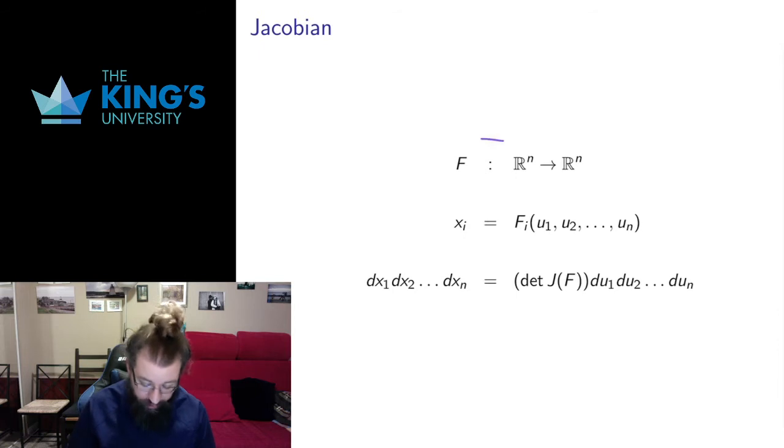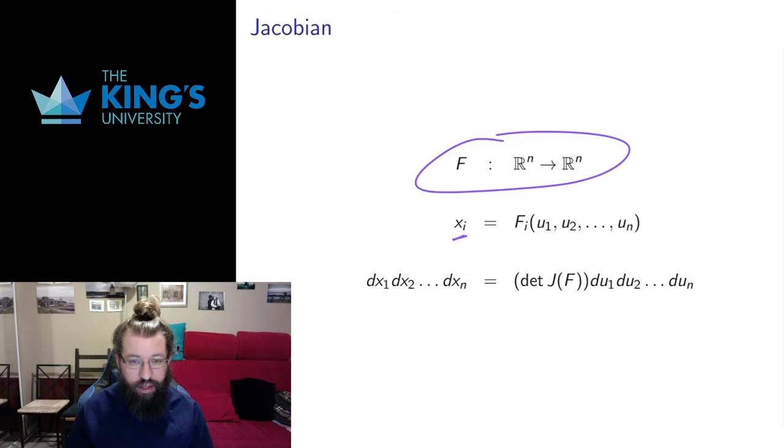So again, if I have this function that I'm representing as a change of variables, the original variable, as I said in the comparison with single variable situations, the original variable is going to be the dependent variable, the output. The new variables are going to be the independent variables, the input to this transformation. And I have the relationship between the differential terms is now the determinant of that matrix of partial derivatives. And I call that the Jacobian determinant, or often we'll just call that the Jacobian.